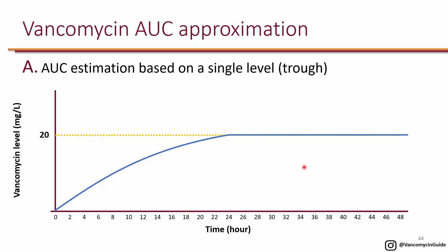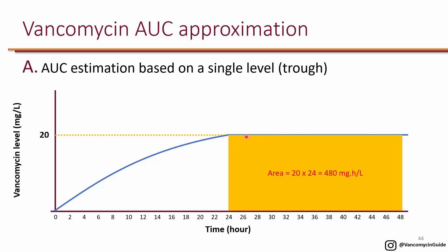One last topic is vancomycin continuous infusion. With intermittent infusion you estimate AUC from the trough. With continuous infusion, you infuse the vancomycin dose over 24 hours, reaching steady state within 24 hours—giving you a flat line with no peak or trough. Any level drawn is simultaneously your peak, trough, and random level. So if you get a level of 20, the AUC is exactly 20 times 24, which is 480. You are no longer estimating—this is the exact AUC because there are no separate peaks and troughs.